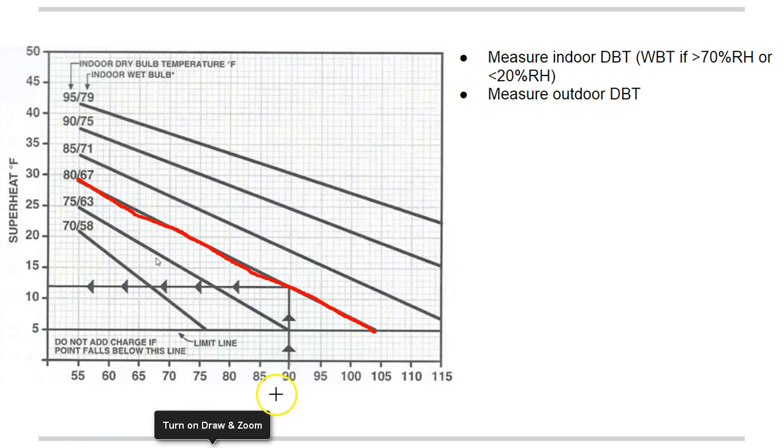Then we're going to go outside and we're going to measure the outdoor dry bulb temperature, 90 degrees. So we'll follow it up to where it intersects our indoor temperature line right here, and then we're going to read it over to determine our superheat. This is the proper superheat with the 90 degree outdoor temperature and 80 degree indoor temperature.